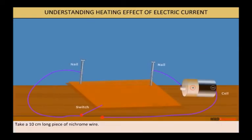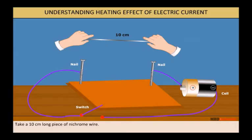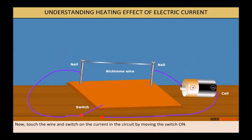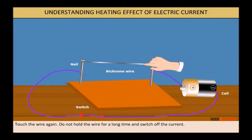Take a 10 cm long piece of nichrome wire. Tie it between the nails. Now, touch the wire and switch on the current in the circuit by moving the switch to the ON position. Touch the wire again. Do not hold the wire for a long time and switch off the current.